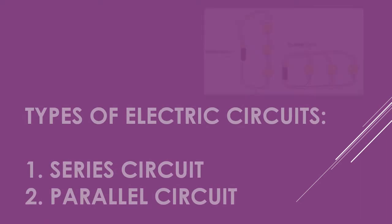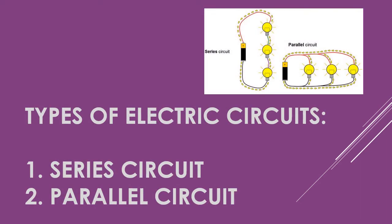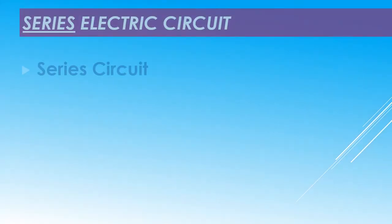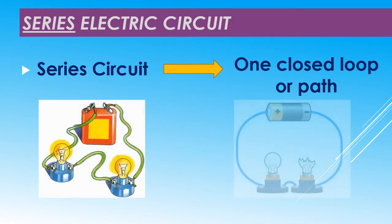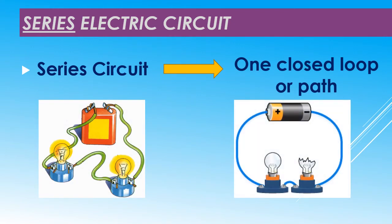Types of electric circuits: series circuit and parallel circuit. Series electric circuit — if you look at the figure below, the two bulbs are connected in a single loop; we only have one closed path. If one of the bulbs is broken, the other bulb doesn't work because the electric current is no longer able to pass through a complete loop.